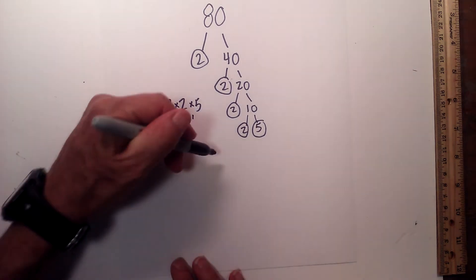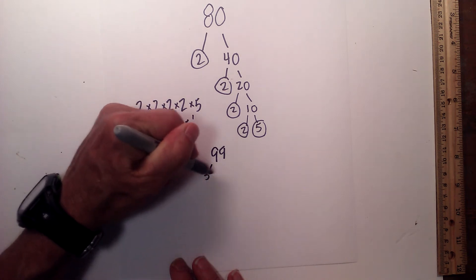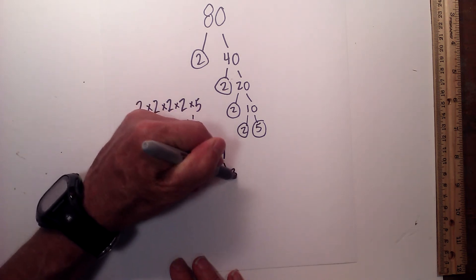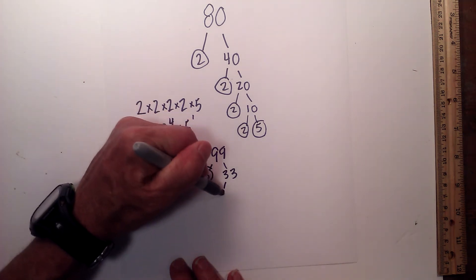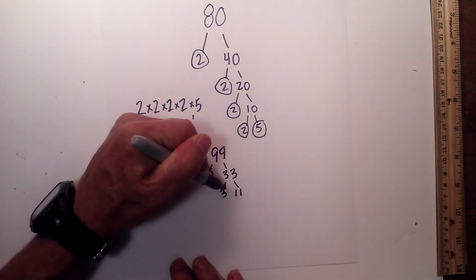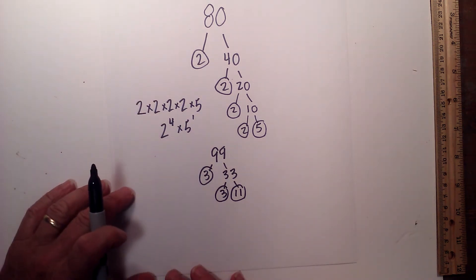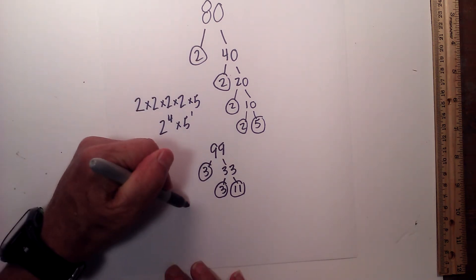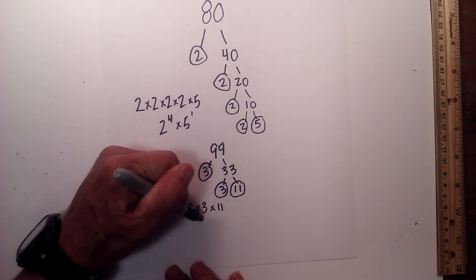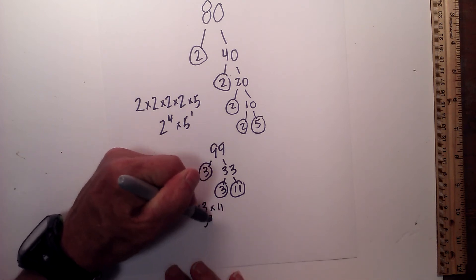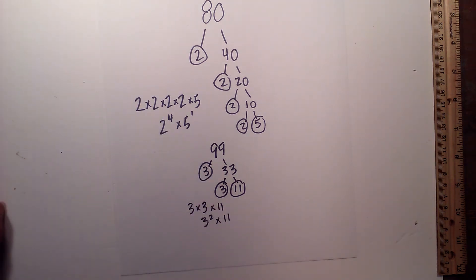For 99, let's begin with 3 times 33 — I'll circle the 3 because 3 is prime. And then 3 times 11 — circle both of them because they are both prime. So the prime factorization of 99 is 3 times 3 times 11, or 3 squared times 11.